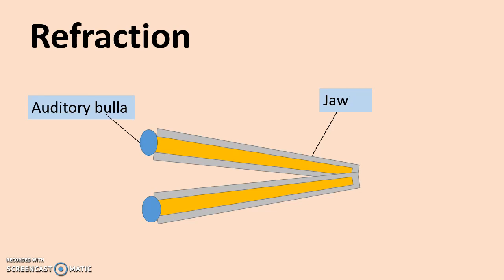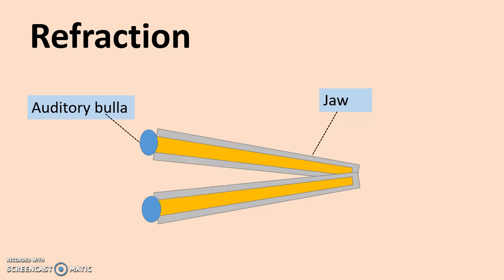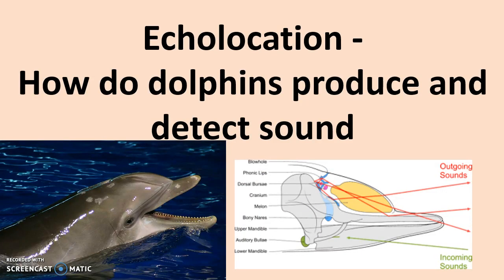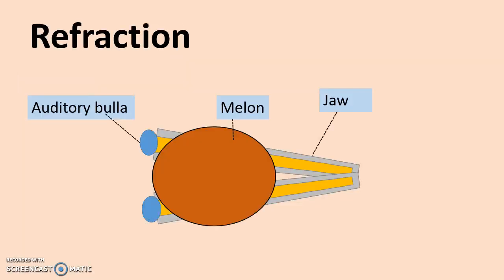So on top of this jaw is this big fatty filled, bowl, circular container here that's called the melon. So it sits on top of the jaw and it's in front of the dolphin. So if we go back just to here, it's this point here on the dolphin. So we've got this big fatty sack here and it's called the melon.